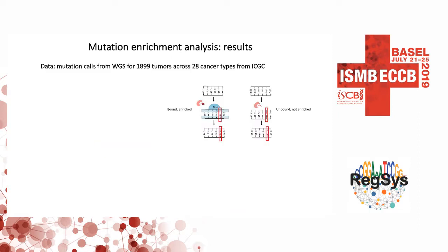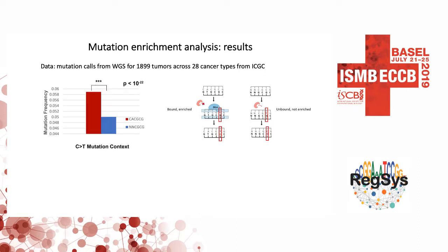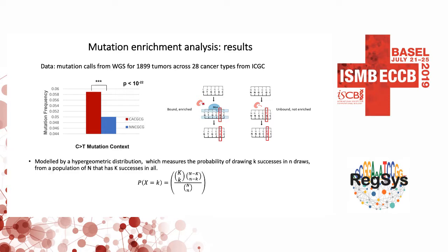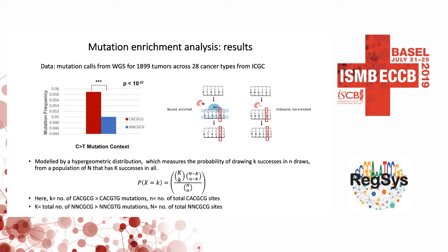To do this analysis, we looked at mutation calls from around 1,900 tumors across multiple cancer types, focusing on non-coding region mutations. We find a striking enrichment of mutations in the MYC-bound case versus the control. We model this as a hypergeometric distribution — pulling a subset of bound sites from a larger set and testing whether the number of mutations observed is significant assuming they come from the same population. This suggests that MYC binding does lead to mutations in some way, but whether it's really tied to repair is a question this doesn't yet answer.